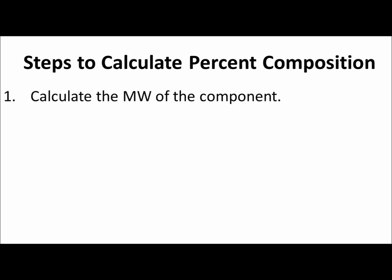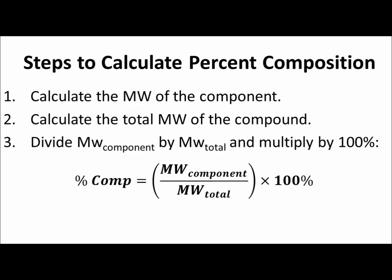Calculate the molecular weight of the component you are calculating percent composition for. Calculate the total molecular weight of the compound using the given atomic masses of each element from the periodic table. Then divide the molecular weight of the component by the total molecular weight and convert it to a percentage.